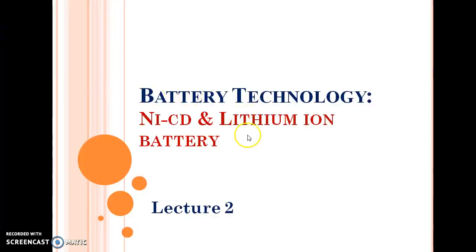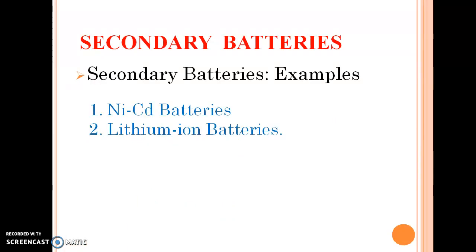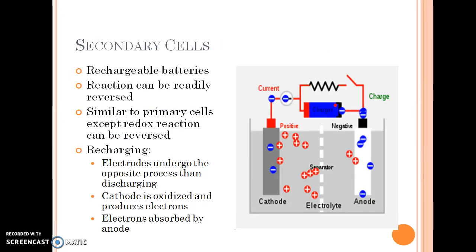Today in battery technology we will be studying the examples of secondary batteries: nickel-cadmium and lithium-ion batteries. These are secondary batteries that can be discharged and recharged a number of times. The main features of secondary cells are that they are rechargeable and reactions can be readily reversed, similar to primary cells, except the redox reaction can be reversed during recharging. The electrodes undergo the opposite process compared to discharging: the cathode is oxidized and produces electrons.